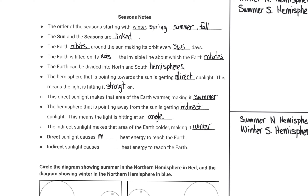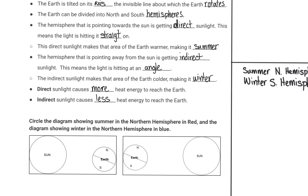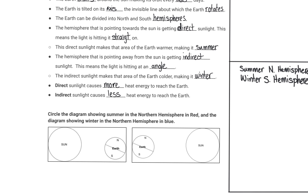Direct sunlight causes more heat energy to reach the earth. Indirect sunlight causes less heat energy to reach the earth. For the diagrams showing summer and winter in the northern hemisphere: on the picture on the left, the northern hemisphere is pointed away from the sun, so this makes it winter in the northern hemisphere. The southern hemisphere is pointed slightly toward the sun. The seasons on the opposite hemispheres are always opposite.